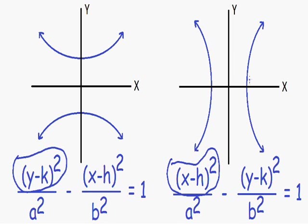Another common question is how do you know the difference between a hyperbola and an ellipse, because the equations for both are very similar. The major difference is the minus sign. If you see a minus sign in between the two terms, you know it's a hyperbola. If you see a plus sign, then it's probably an ellipse or a circle.